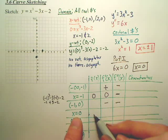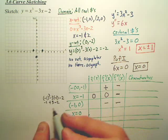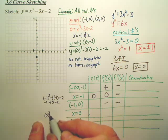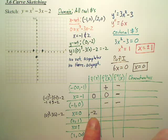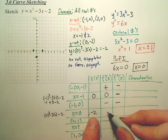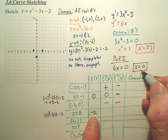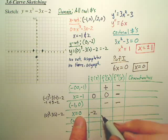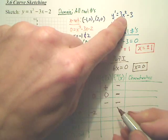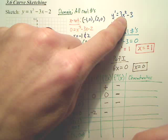Now plug in zero to the original: zero cubed minus three times zero minus two. I already got that one, actually. And that right there is a point of inflection. Let's plug in zero. When you plug in zero to the derivative, what do you get? You get negative.